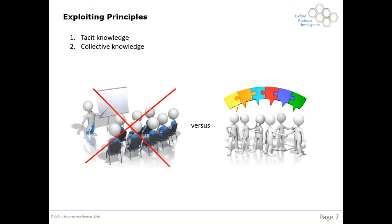The two guiding principles are tacit knowledge and collective knowledge. Tacit knowledge applies to the individual — it's about my experiences in the context of my observation. Collective knowledge is where we bring all of that together. A typical team meeting is a directed transfer of information — rather inefficient because you don't get the context or the experiences of the listeners. Compare that with a group conversation: a group conversation is much more powerful than a single expert presenting to a team of people.